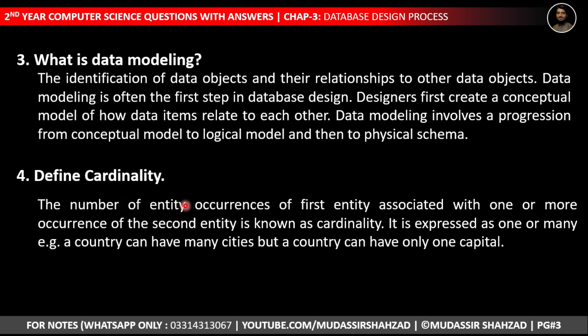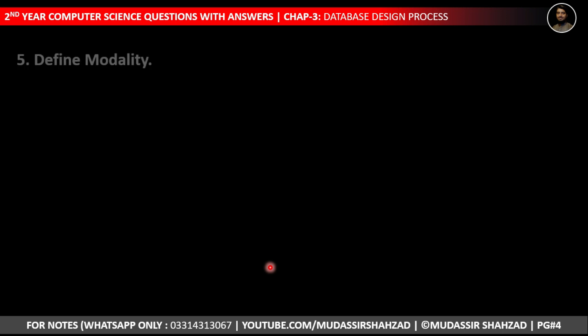The number of entity occurrences of a first entity associated with one or more occurrences of a second entity is known as cardinality. It is expressed as one or many. For example, a country can have many cities, but a country can have only one capital. This is a cardinality example.